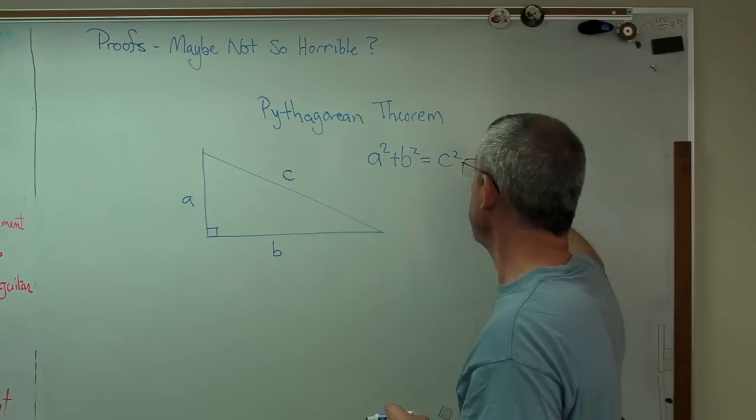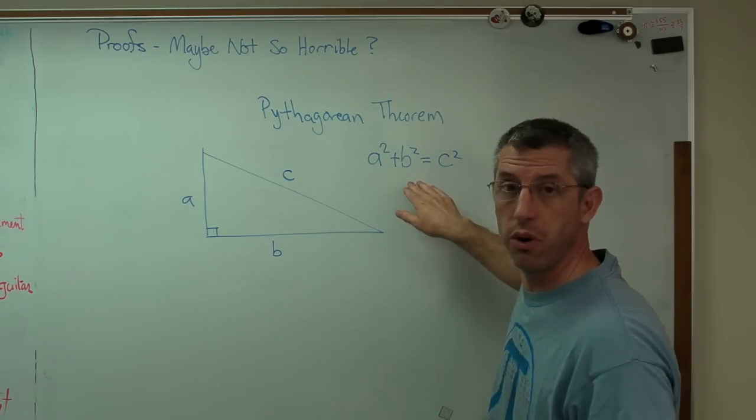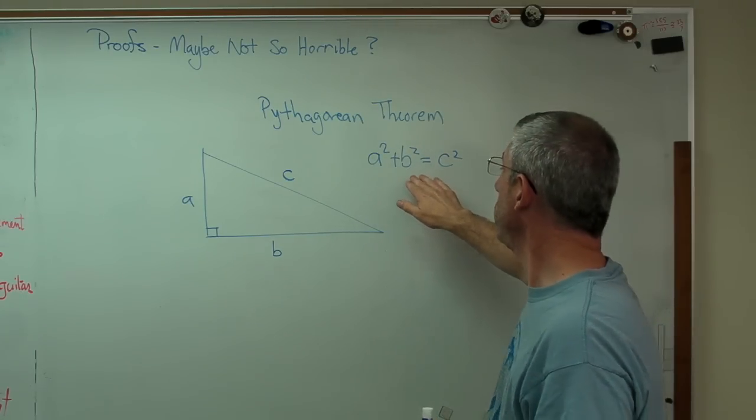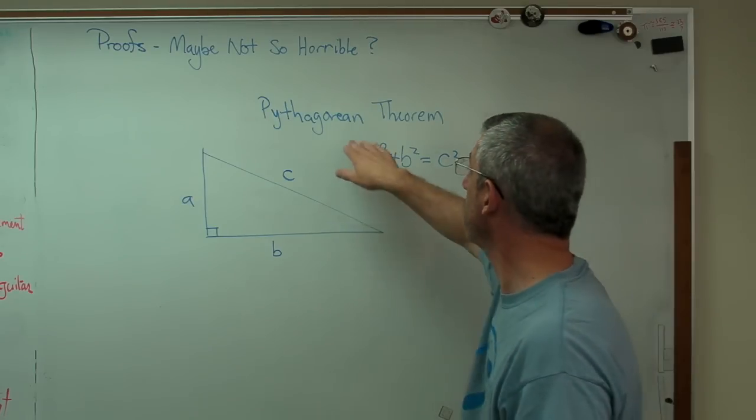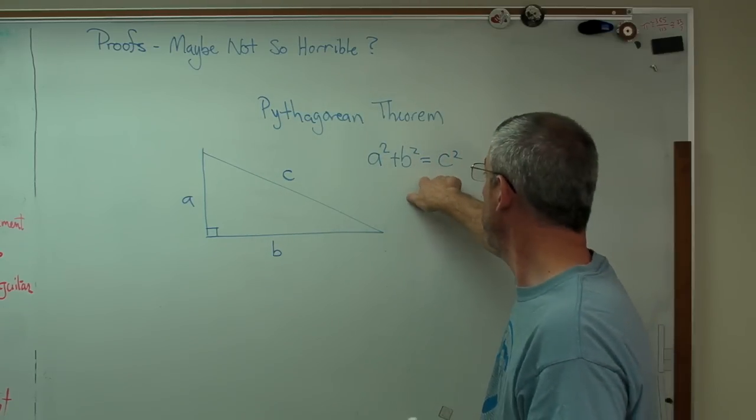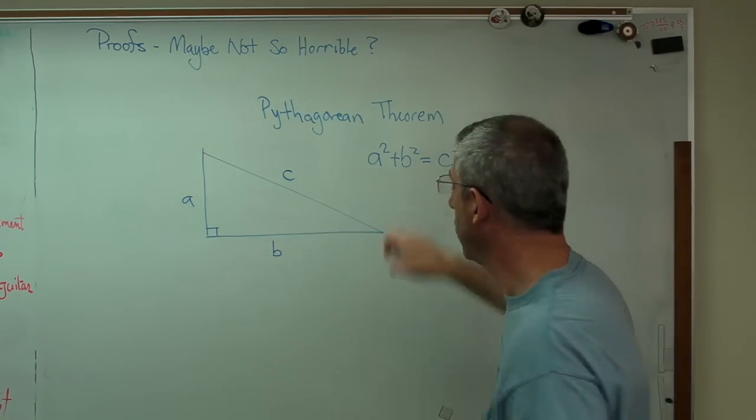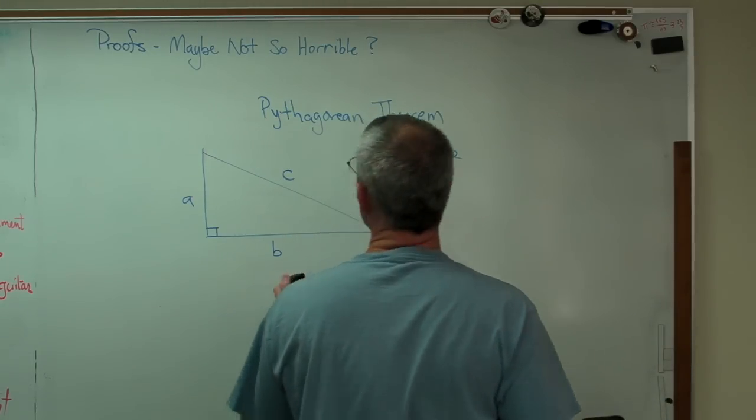Engineers, physicists, everybody uses this all the time. Now when we use it, we assume it's true, and it is true. But it's true not because we think it's true. It's because somebody, one of Pythagoras' group, proved this. Once it's been proved, that's it. It's true. You can accept it. Never have to question it again. So I'm going to show you one way to prove this. There are more than one. This is probably not even one of the particularly elegant proofs, but it's one I know.